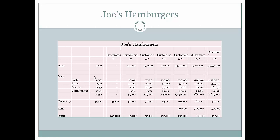Variable costs change or vary in relationship to the numbers sold. But even if he doesn't sell anything, he still has to pay $45 for his electricity. So he's going to have a loss of $45 when he doesn't sell any hamburgers. That $45 is either a mixed or a fixed cost. Electricity is going to go up if he uses it, so in all likelihood this is going to be a mixed cost — it has a fixed portion of $45 no matter what, but then as he uses more electricity with more customers, it's going to go up.